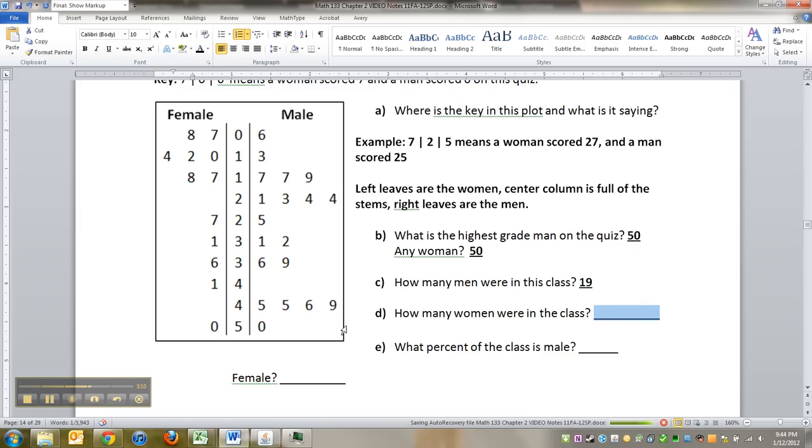And that means that there's got to be 12 leaves on the women's side, because I remember that there's 31 total. But I can count them: 1, 2, 3, 4, 5, 6, 7, 8, 9, 10, 11, 12. Look at that.